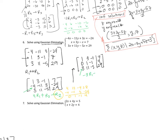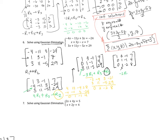Next, eliminate the 3 in row 3: negative 3 times row 1 plus row 3 gives new row 3. Scratch work: negative 3 times row 1 gives negative 3, negative 9, 3, negative 21. Adding row 3 (3, 11, negative 5, 29) gives 0, 2, negative 2, 8. Then taking negative 2 times row 2 plus row 3: scratch work gives 0, negative 2, 2, negative 8 plus 0, 2, negative 2, 8, which equals 0, 0, 0, 0. Row 3 becomes all zeros, so there are infinite solutions.